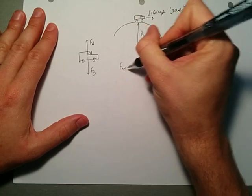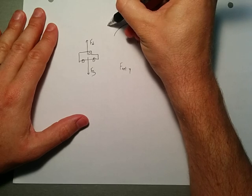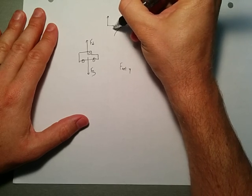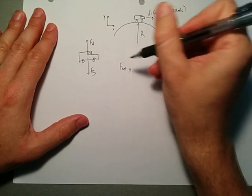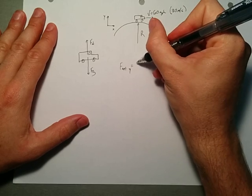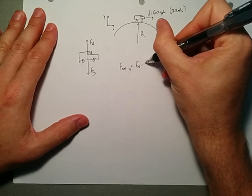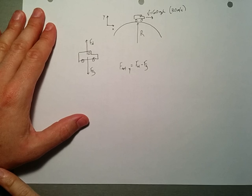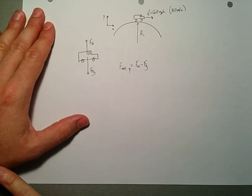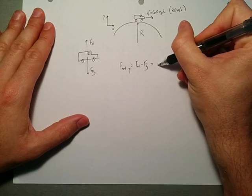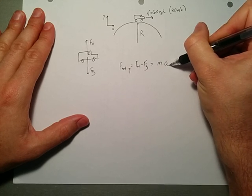We just write F net in the y direction, again, as per usual, calling this axis y. The F net in the y direction is just the normal force minus the force of gravity. Pretty straightforward. This looks like stuff we've done a lot of times before. And that's equal to mass times the acceleration in the y direction.